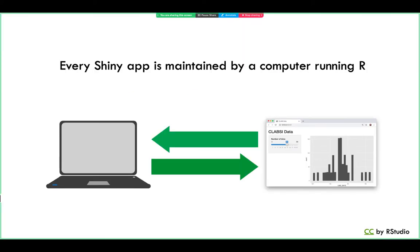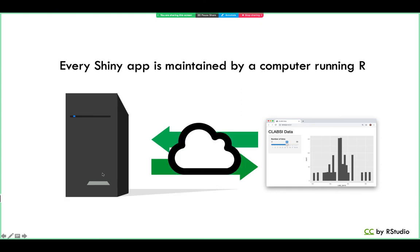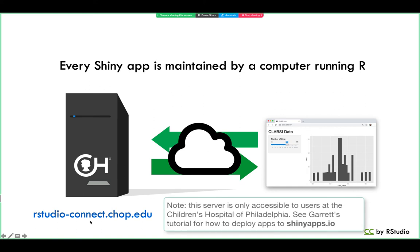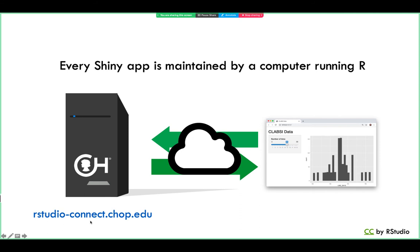To share your app over the web, all you have to do is arrange to replace your own computer — which shares your app locally — with a web server that can share your app over the network. And here at CHOP, the way to do this is to deploy your app to the CHOP RStudio Connect server. RStudio Connect is a commercial product made by RStudio — I'm only going over it because that's the technology we have available to us here at CHOP.